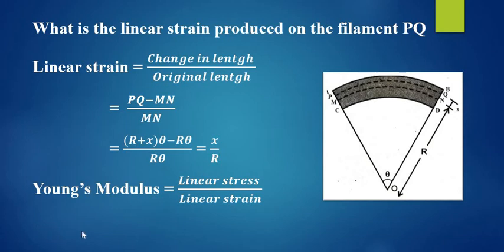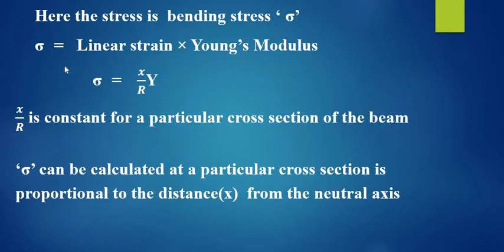We know that Young's modulus is equal to linear stress divided by linear strain. Here, the stress is called bending stress sigma. Therefore, sigma equals linear strain into Young's modulus. Sigma equals x by R into capital Y. Here, x is the distance of the filament from the neutral axis, R is the radius of curvature, and Y is the Young's modulus of the material of the beam.